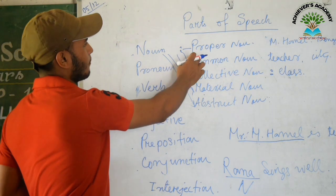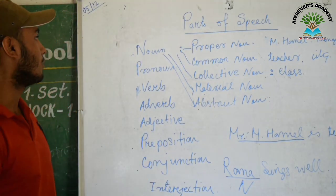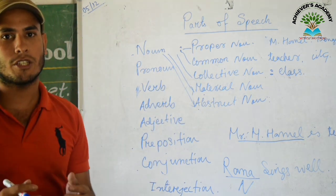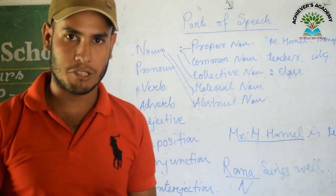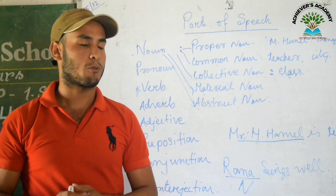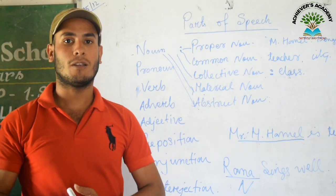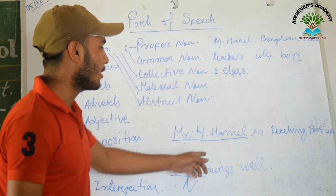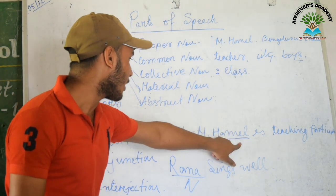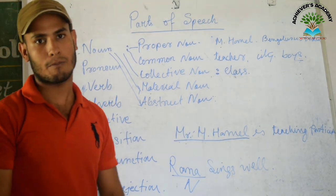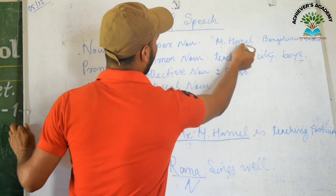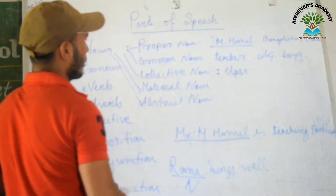First of all we have the proper noun. A proper noun is just a name given to a particular thing, particular person, or particular place. For example, Mr. MML is a particular name, so Mr. MML is a proper noun here because it is a particular name.